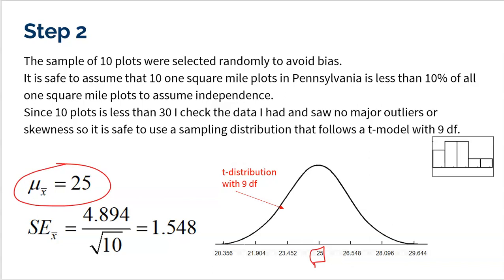10 plots is actually less than 30. So this is one of those examples that does come up on the AP test where you actually have to check your data because I need to make sure that if I'm going to use a t-distribution, I need to make sure that my data is roughly symmetric, right? So meaning no major outliers, no major skewness. So I actually made a little plot right here for you, okay?